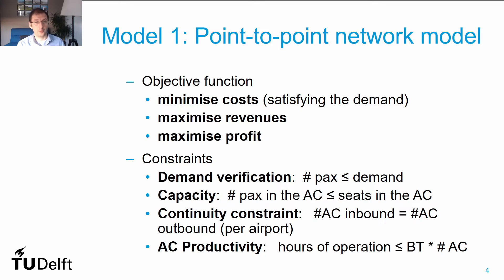Depending on the problem that we are trying to solve, multiple objective functions can be considered. For instance, if we want to satisfy the entire demand, maybe we would like to minimize costs. Otherwise, perhaps maximization of revenues is one option where we try to explore the maximum of the market. Or combining costs and revenues is the best option, and we try to maximize profits. That's perhaps the most common approach to address this type of network models.